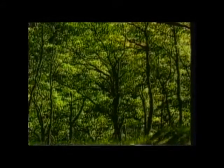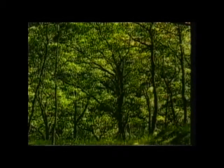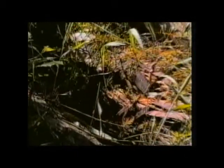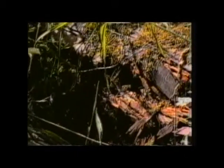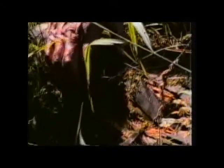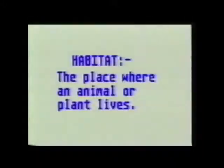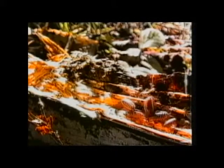Many different animals and plants may live in a woodland environment. They may live in many different places within the woodland, such as this rotting log. The place where an animal or plant lives is called a habitat. The rotting log is the habitat of these wood lice.